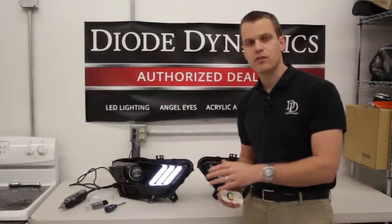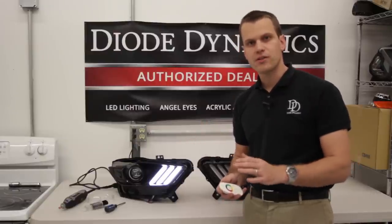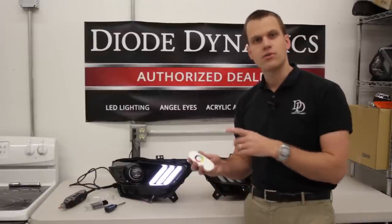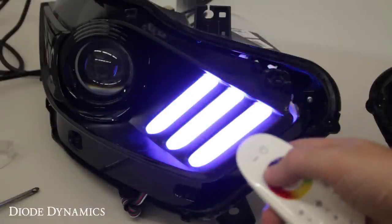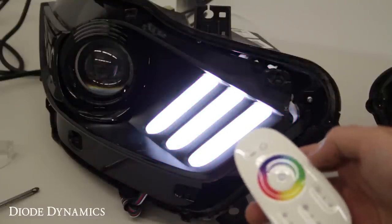Now from the factory you've got the white gills or DRLs in the headlight. We're going to replace the light source, the boards inside the headlight, so that you can use a remote control to change the color to anything you'd like. Then just set it back to white for everyday driving.